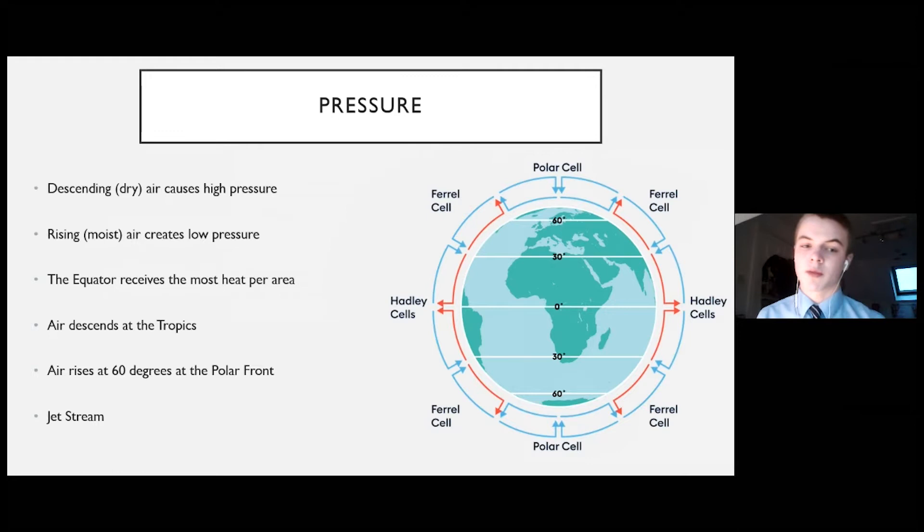This is why we have different pressures. Descending air causes high pressure, and it's usually dry, and rising air creates low pressure, and is usually moist. At the equator, where we have a higher temperature, air is forced to rise, and as it does so, it creates a belt of low pressure. The air and water vapour cause to condense and form clouds and precipitation. As it rises, it then moves northwards to around 30 degrees latitude, where it sinks and creates a belt of high pressure. From here, it can then even move southwards back to the equator to replace the moving air, and to complete the Hadley cell.